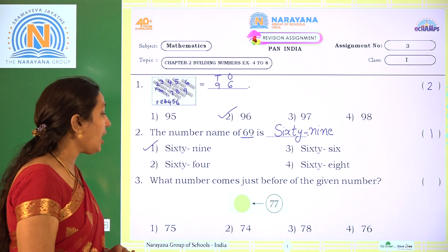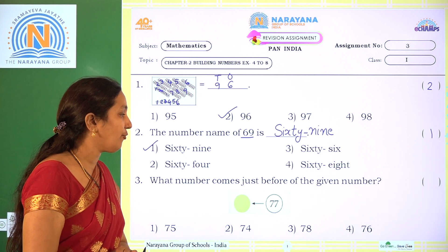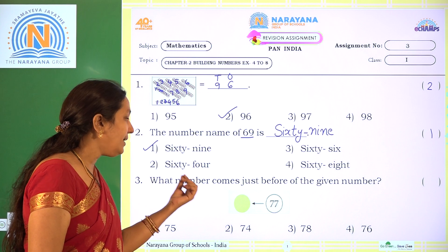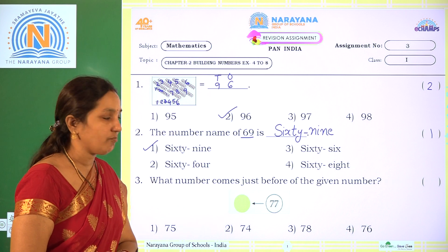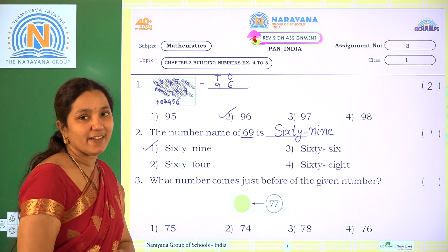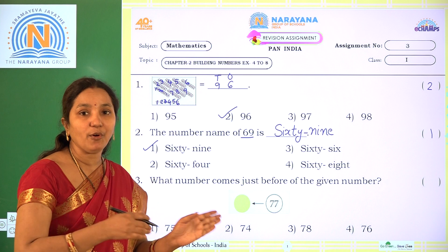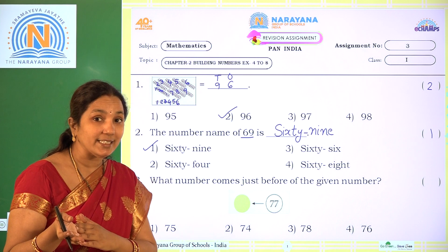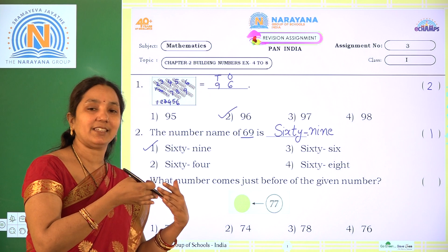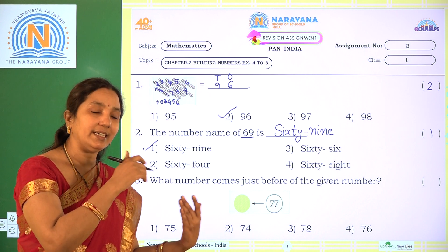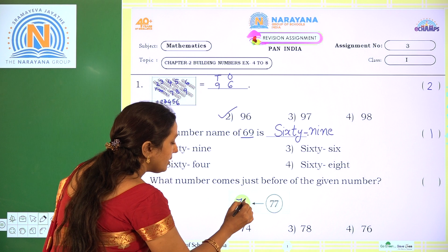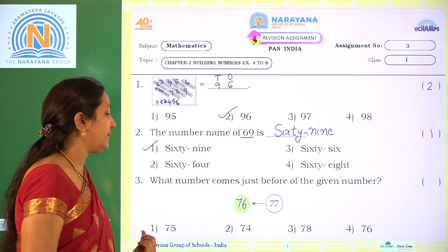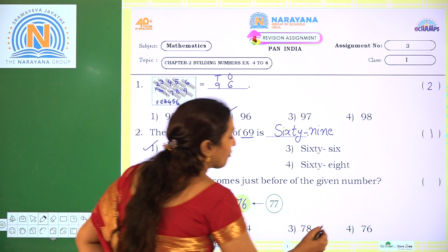Next one. What number comes just before the given number? The given number is 77. What is the number before 77? We count backward: 77, 76. So just before 77 is 76. The correct option is option 4.